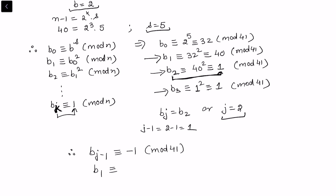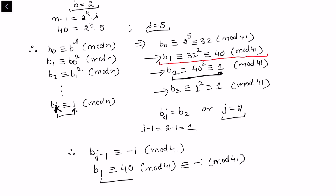We found that b₁ ≡ 40 mod 41, and 40 ≡ -1 mod 41. This satisfies the condition of the strong Fermat's test, so we conclude that 41 is a probable prime.